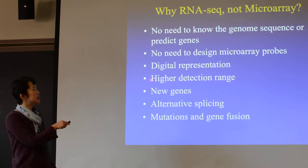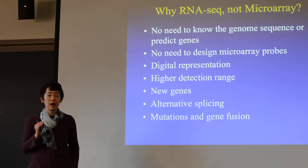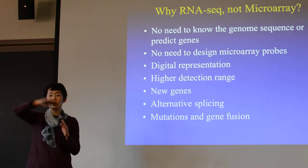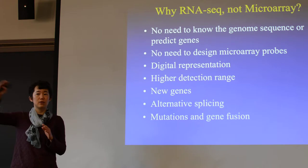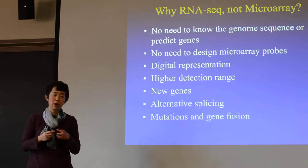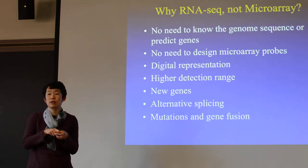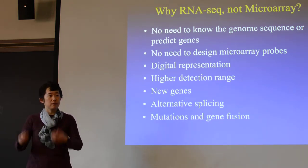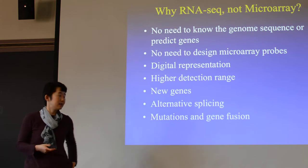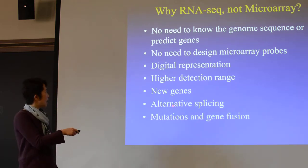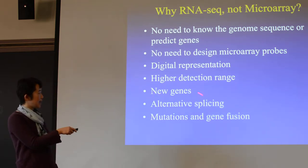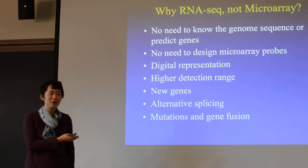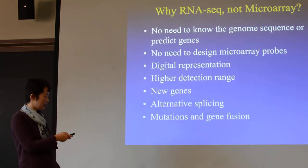It has a higher detection range. If you look at microarray probe signals, there is a plateau towards the end — when the transcript becomes too abundant, the microarray spot will saturate the probe. With sequencing, the more molecules you have of a gene, the more you will sequence that gene or transcript. You can also detect new genes — things you didn't know were genes — because if you sequence it all, you now know this region has transcript coming out.